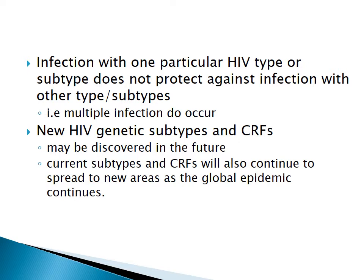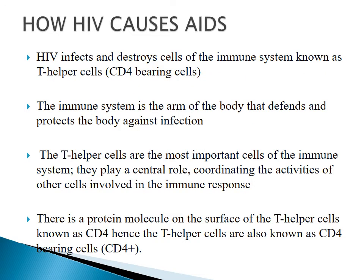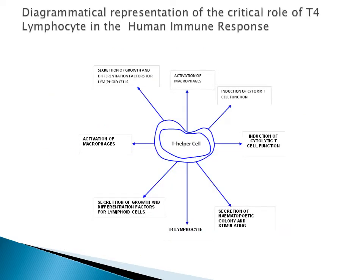So how does HIV cause AIDS? HIV infects and destroys the cells of the immune system known as T helper cells. Here is a diagram of the immune system structure — the T helper cells are right at the center. The T helper cells identify foreign bodies and send signals to all other arms of the immune system, helping those other components perform their responsibilities.